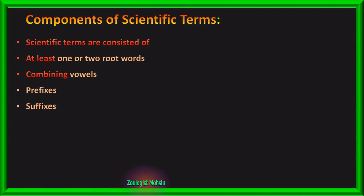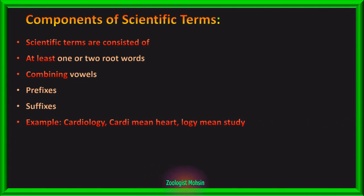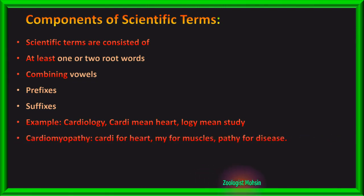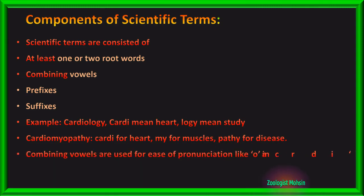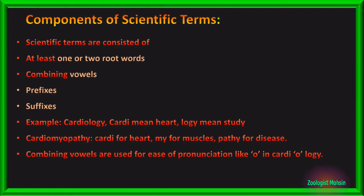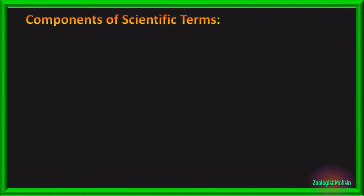Let's understand this with an example. Cardiology: cardi means heart, and logi means study of. Similarly, cardiomyopathy: cardi for heart, myo for muscles, and pathy for disease. In this case, the letter O is added as a combining vowel to make pronunciation easier, like the O in cardiology. Y at the end is also a combining vowel.